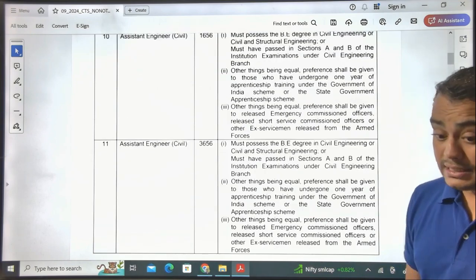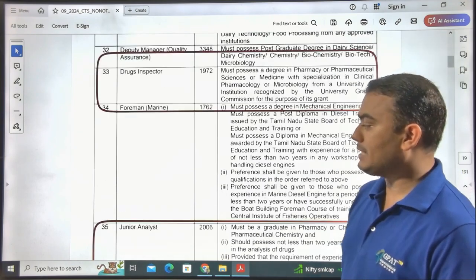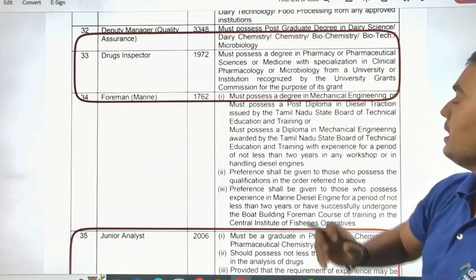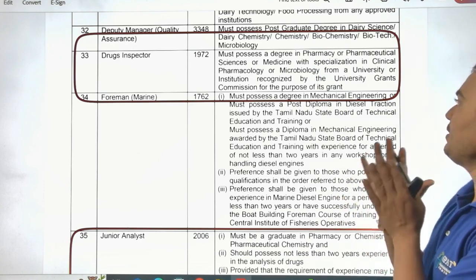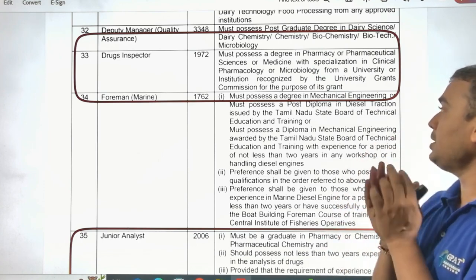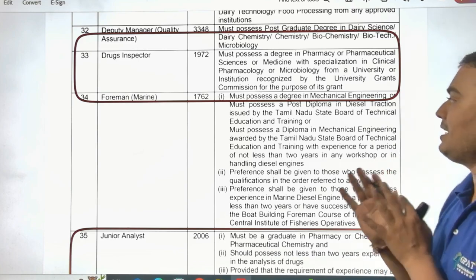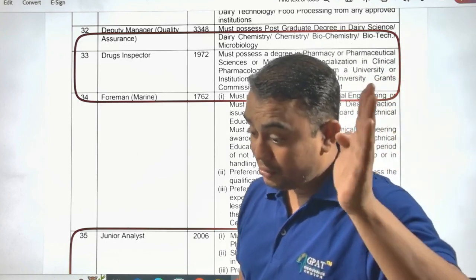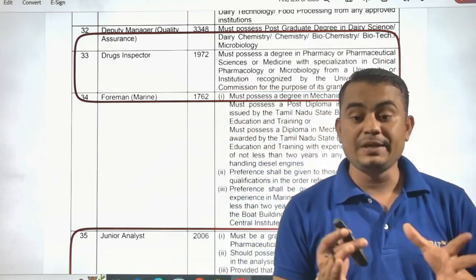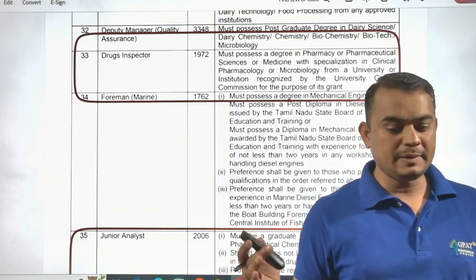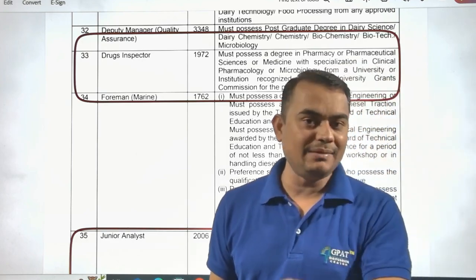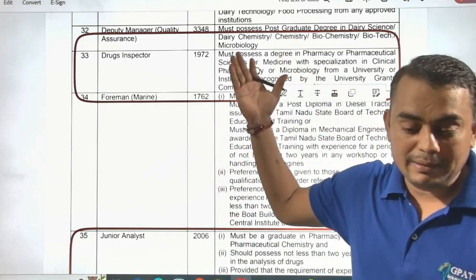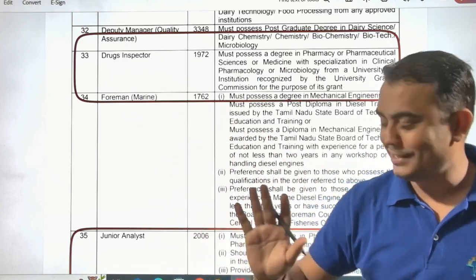For the Drug Inspector post, the student must possess a degree in Pharmacy, Pharmaceutical Sciences, or Medicine with specialization in Clinical Pharmacology or Microbiology from a university recognized by the University Grants Commission. Regarding experience: many students ask whether 18 months of experience is required. The High Supreme Court has clearly stated that experience is not required for this post.